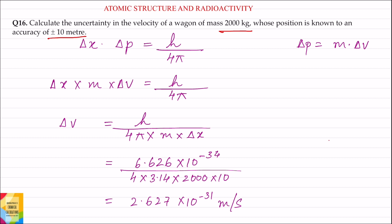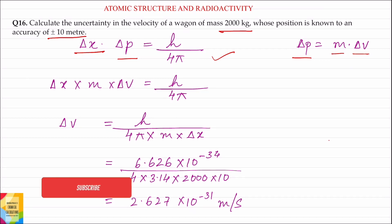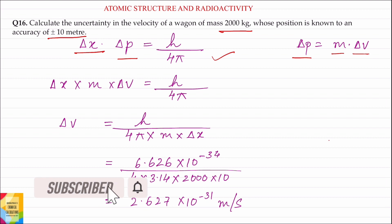The value of uncertainty in position, delta x, is given as 10 meter. We know that delta x into delta p is equal to h divided by 4 pi. Now delta p is equal to m into delta v, where delta p is the uncertainty in momentum, m is the mass, and delta v is the uncertainty in velocity.